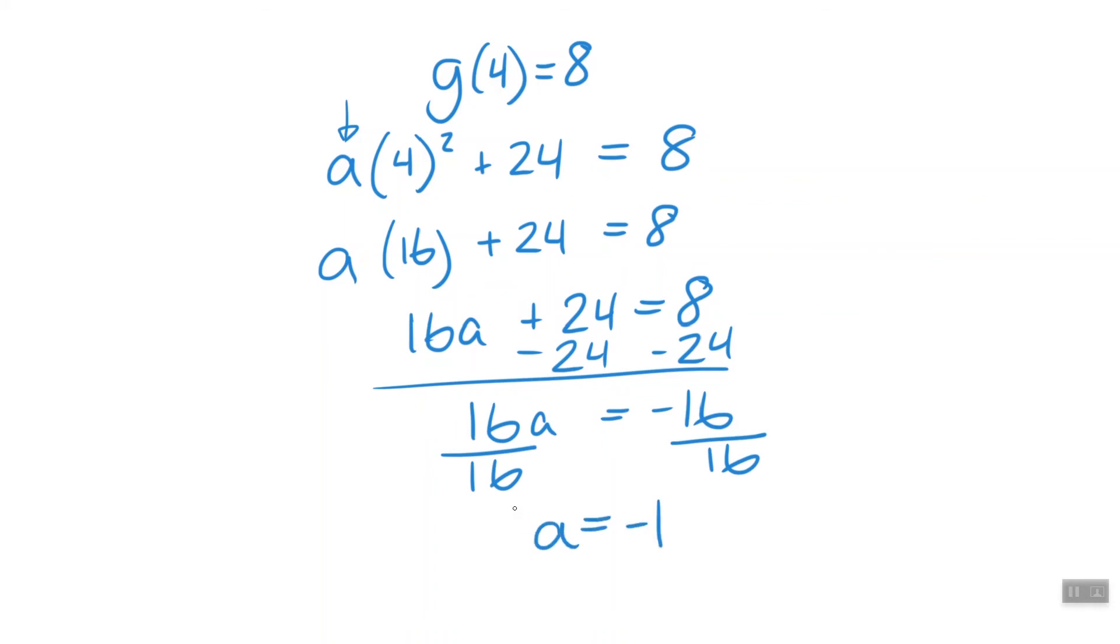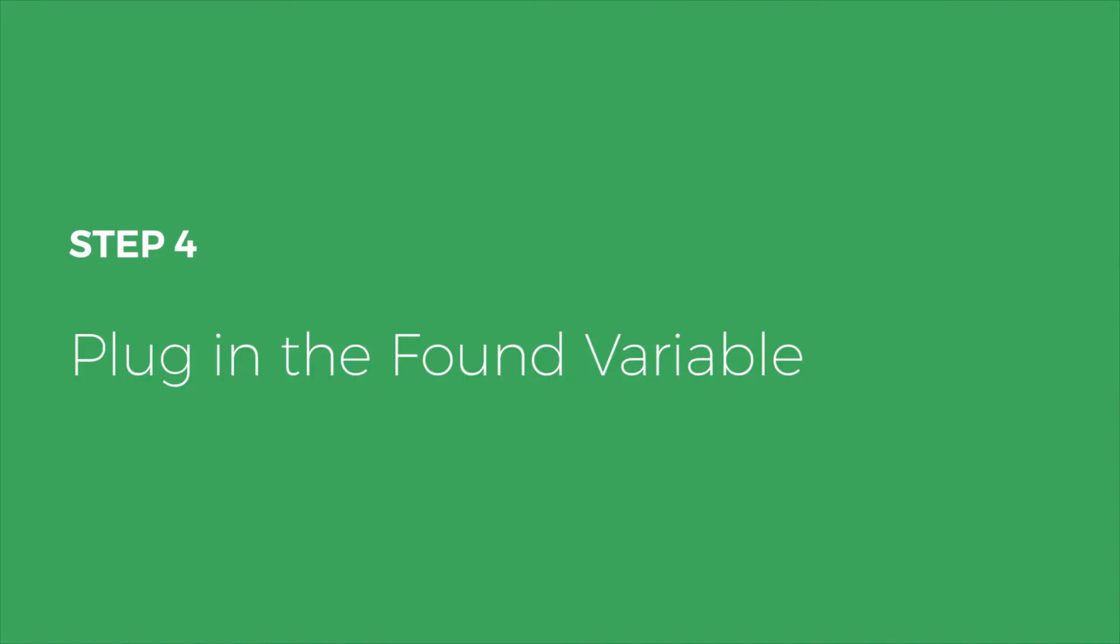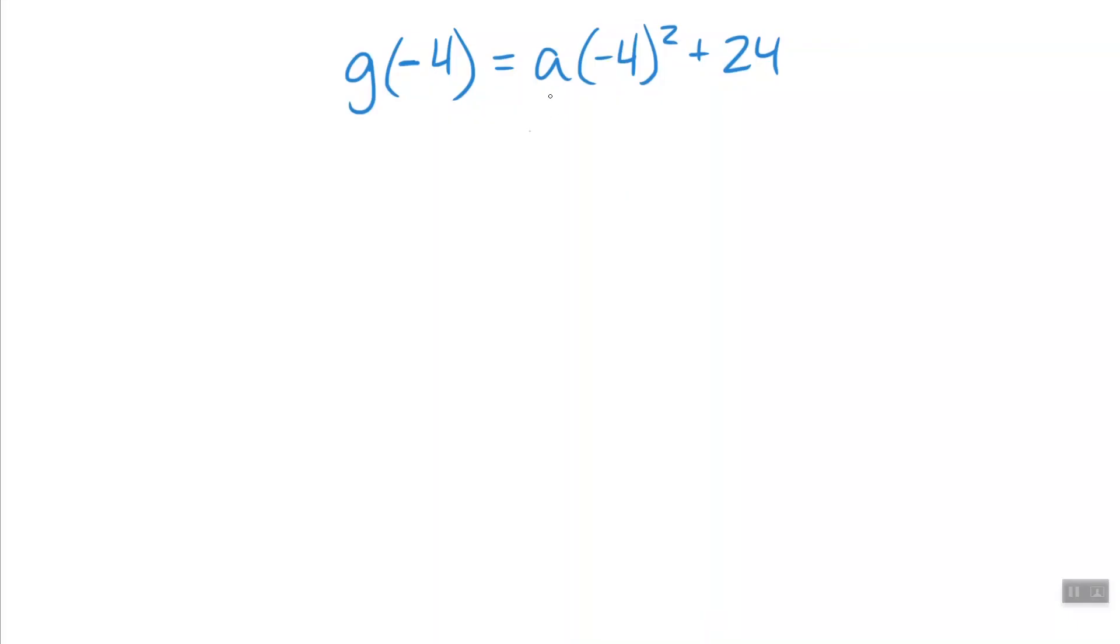Awesome. So we have a. Let's plug it in to where we left off earlier. So now we're going to replace a with negative 1 and combine them all. So we have g(-4) equals negative 1 times (-4) squared plus 24.